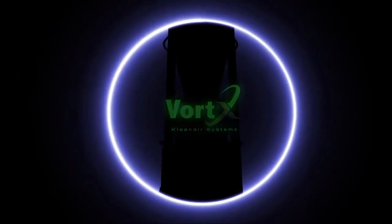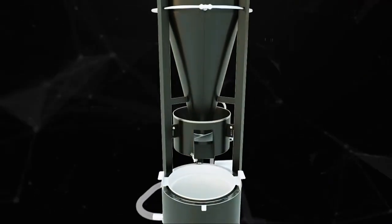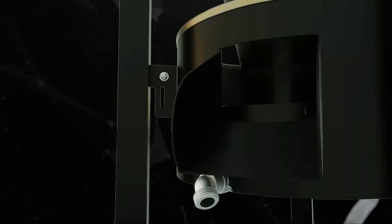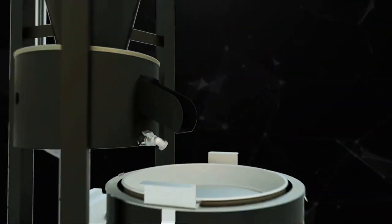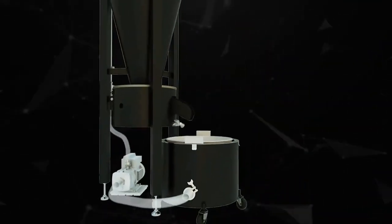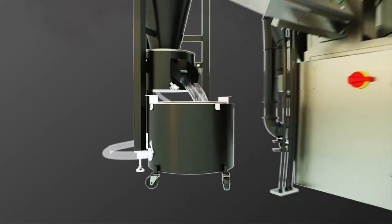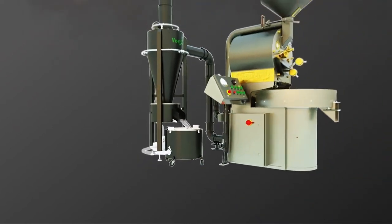Introducing the Vortex EcoFilter, the only process that filters contaminants from your roaster's exhaust and reduces your carbon footprint. The EcoFilter keeps neighbors and clean air authorities happy, while making roasting safer, more efficient, and more profitable.